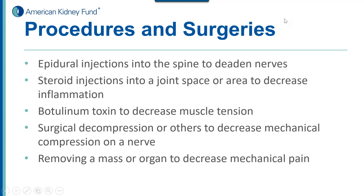Procedures and surgeries are usually considered when other conventional therapies are not effective. There are specialists who can do injections, epidural injections, steroid injections, botulinum toxin, and surgical decompression to decompress nerves that are being constantly aggravated. And obviously, if you have acute mechanical pain, removing the source — such as a gallbladder or a tumor — can be necessary.